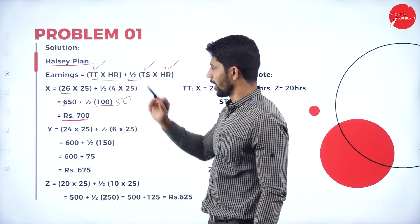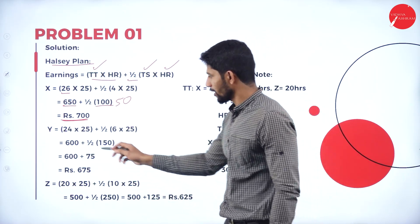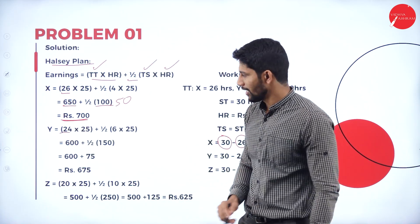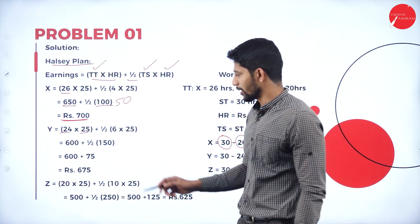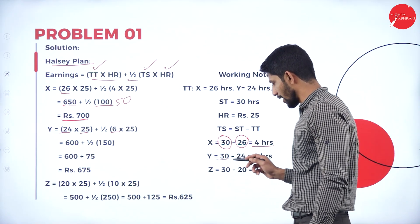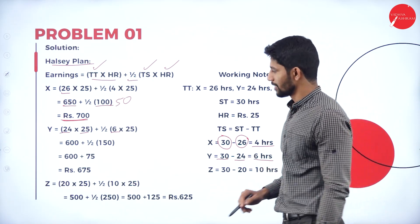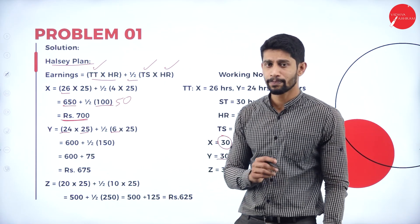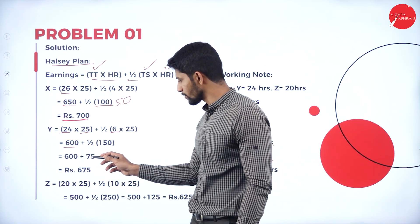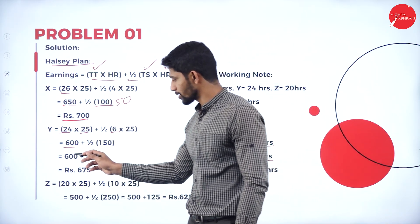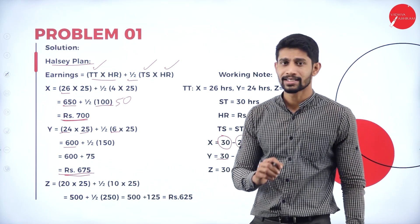Next, Mr. Y — same formula: TT × HR + half of TS × HR. Time taken is 24 hours and hourly rate is 25 rupees. Standard time is 30 hours, he completed in 24 hours, so time saved is 6 hours. So 24 × 25 = 600, plus half of 6 × 25 = half of 150 = 75. Therefore 600 + 75 = 675 rupees is the earning of Mr. Y.